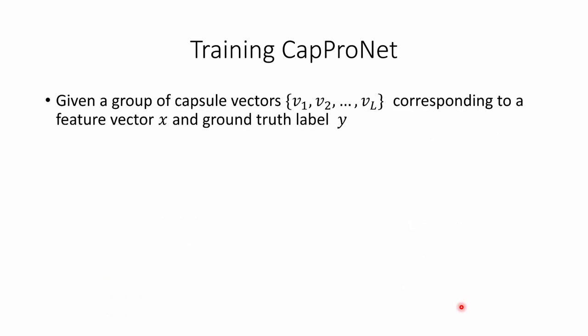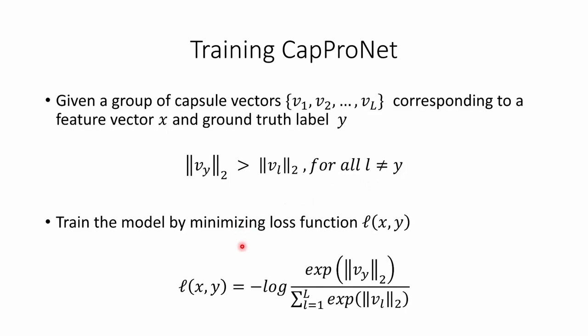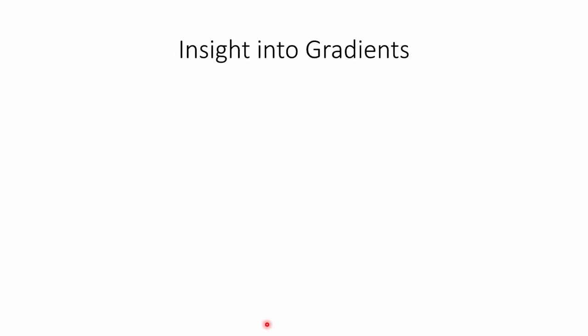Now let's see how we train CapProNet. Given a group of capsule vectors v1 to vL corresponding to a feature vector x and ground truth label y, we want to train CapProNet so that the capsule for the target class has a larger norm than all other classes. We can train this model using a standard loss function, for instance by minimizing the negative log-likelihood loss. We learned some capsule subspaces and how we create the actual capsules. Now we want to see how these subspaces are actually learned, by analyzing the gradient of the loss function with respect to the bases of these subspaces.